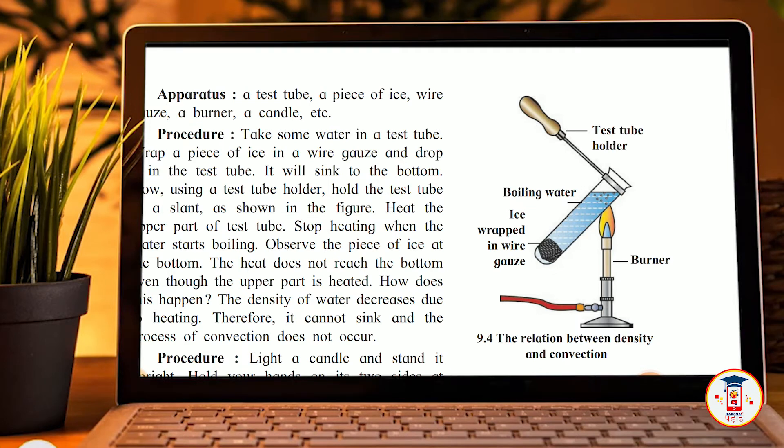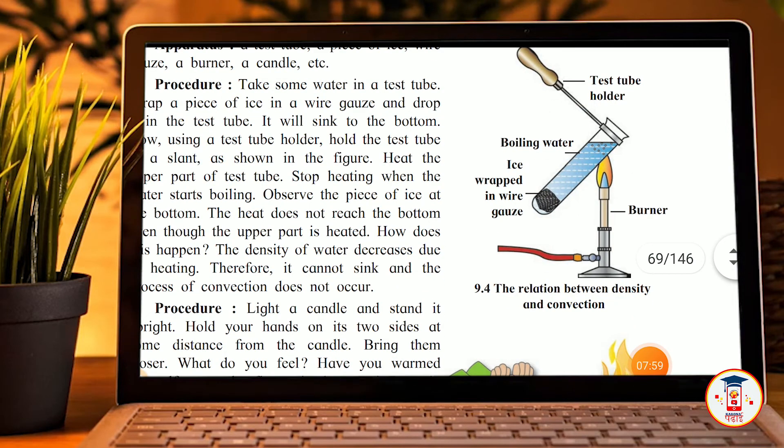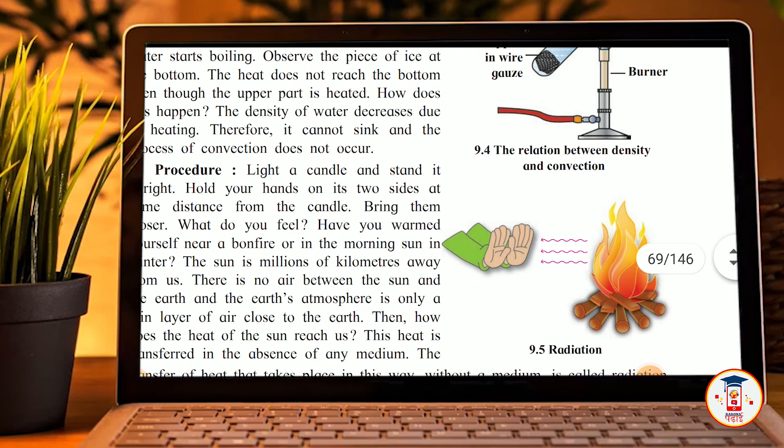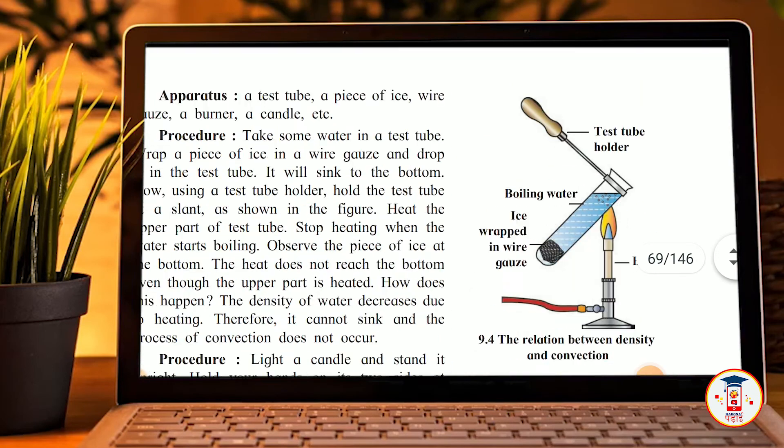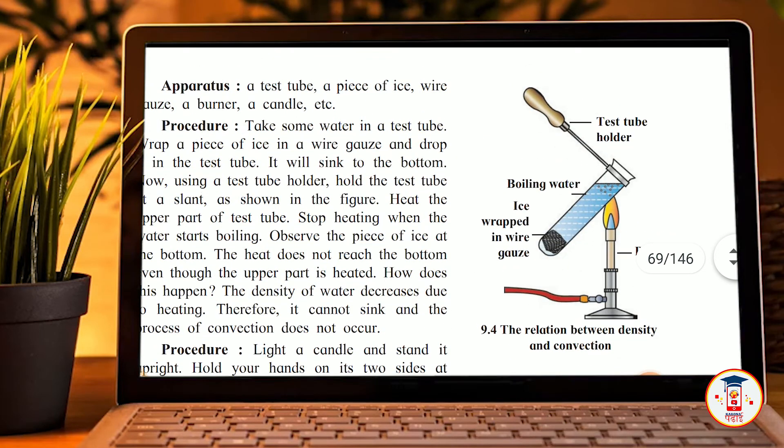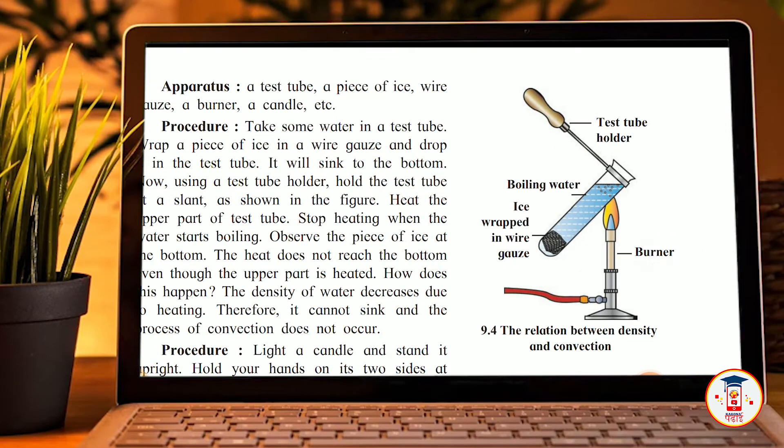First of all, we need a test tube, a piece of ice, wire, a gas burner, and a candle. This is the whole process. We will see how this works.